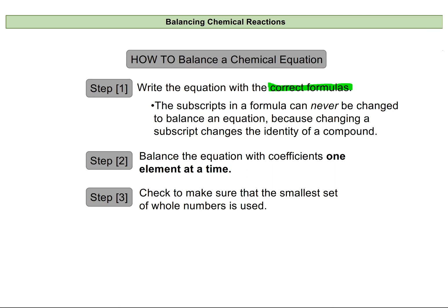It's important to note that our subscripts can never be changed in a chemical equation. If we have something like C2H6, the 2 and 6 give us information about the ratio of atoms in our molecule. If we change that, we are changing the molecule itself, and the chemical reaction indicated will no longer apply.